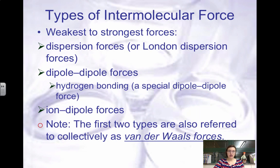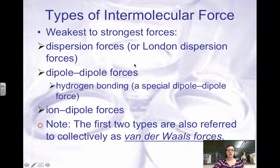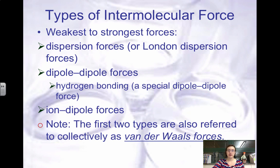The different types of intermolecular forces, from weakest to strongest: we have dispersion or London forces — you need to know both names — then dipole-dipole forces, then hydrogen bonding, which is a special type of dipole-dipole, and then ion-dipole forces. The first three types — dispersion, dipole-dipole, and hydrogen bonding — are collectively called van der Waals forces, named after van der Waals who described the deviation of real gases from ideal behavior.